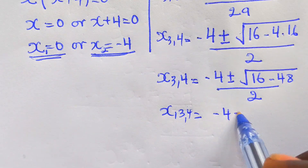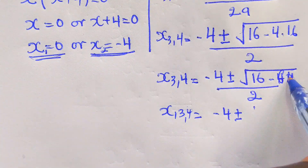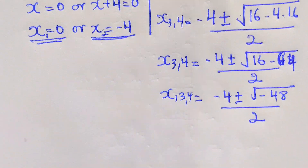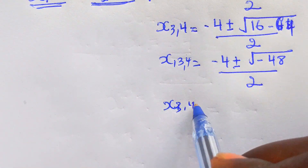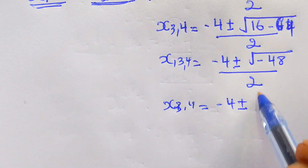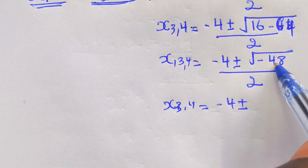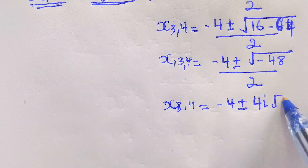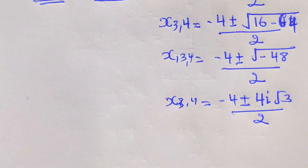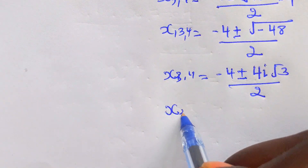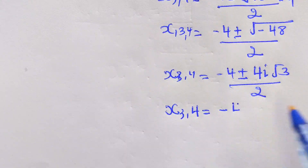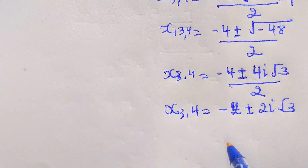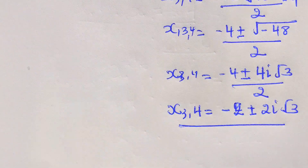So x3 and x4 equal to negative 4 plus or minus square root of negative 32, over 2. Now 48 equals 16 times 3, and the square root of 16 is 4, so we get 4i square root of 3, over 2. Dividing through by 2 gives x3 and x4 equal to negative 2 plus or minus 2i square root of 3.